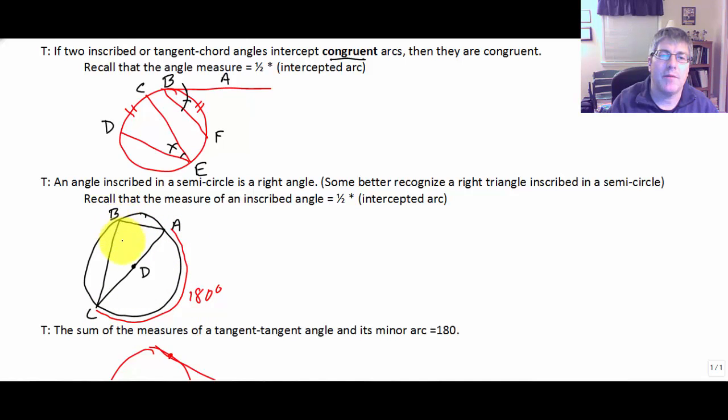Well, if an inscribed angle measures half of its intercepted arc, the intercepted arc is a semicircle, 180 degrees. Therefore, the inscribed angle must be a right angle. And you will also hear people talk about if a triangle is inscribed in a semicircle, then it must be a right triangle.